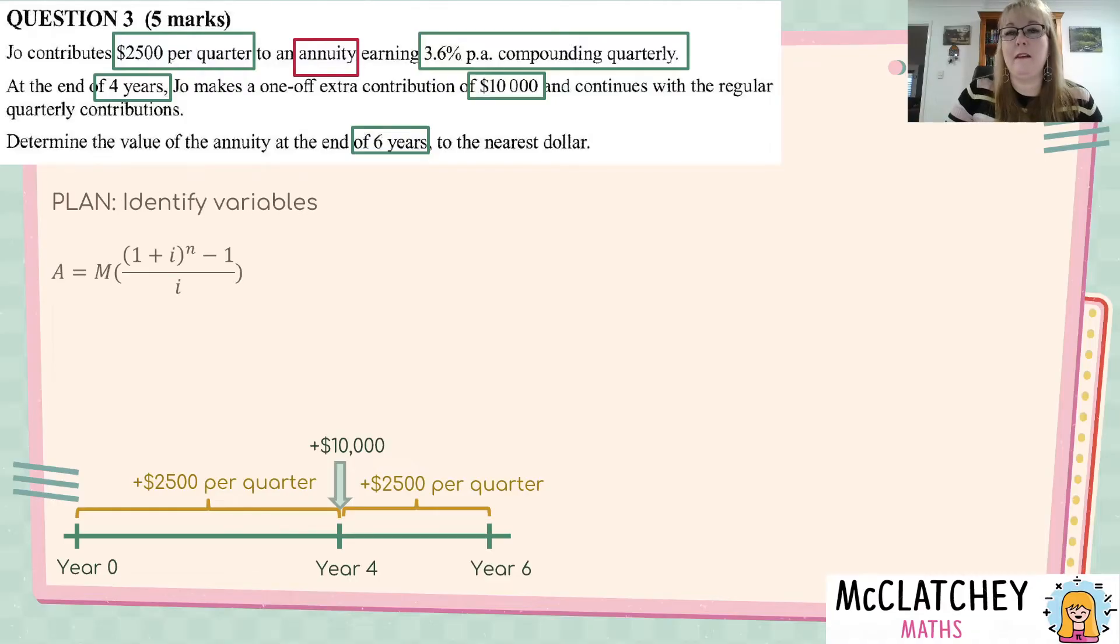Okay, now we need to identify some of our variables as well. So, we've got our formula. We've got some parts of that formula. We've got M, which is our regular contribution. And we're told that's $2,500 a quarter. We've got the interest rate, which we need to convert to a quarterly interest rate. And this is a step that a lot of people forget. So, we're going to divide that by four and we'll get 0.009. Our next step is also the value for the number of periods. So, it needs to be six years worth. We need to make sure we just treat it separately from that $10,000 and go for six straight years, four times a year makes 24.